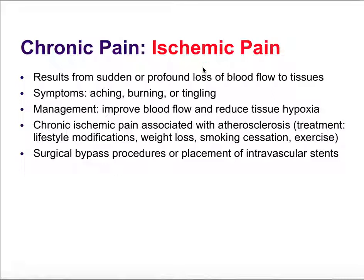Ischemic pain results from ischemia — interruption in blood flow. When tissues aren't getting blood, they become injured. Symptoms include aching, burning, or tingling pain. Management involves restoring blood flow and reducing tissue hypoxia. Chronic ischemic pain is often associated with atherosclerosis, where atherosclerotic plaque blocks blood flow. Treatments include lifestyle changes — losing weight, stopping smoking, exercise — and surgical bypass, stenting, or other methods of restoring blood flow.